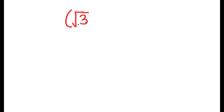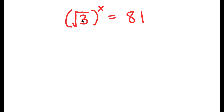In this problem, we have the square root of 3 to the power of x is equal to 81. To solve this, I'm going to start with the square root of 3.